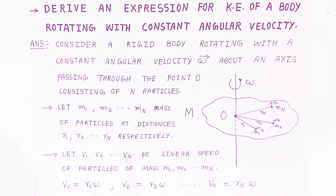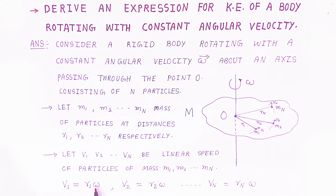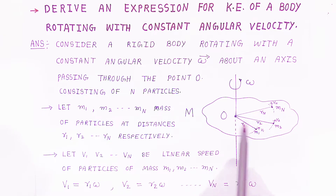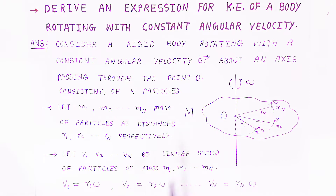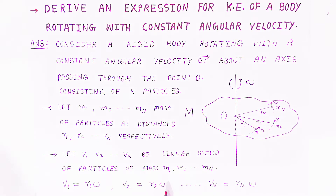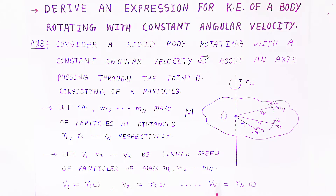How are linear velocity and angular velocity related? Each particle performs linear motion, and that relates to angular velocity. The linear velocity of the first particle is equal to r1 times omega. The linear velocity of the second particle is equal to r2 times omega. Similarly, the nth particle has linear velocity equal to rn times omega. This is how linear velocity is related with angular velocity — because each particle is at a radius from the axis.